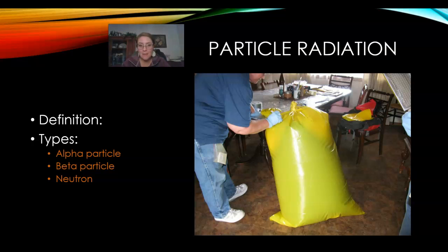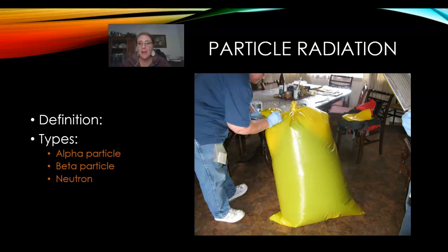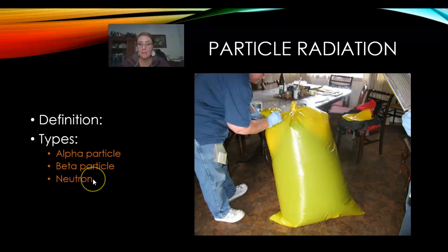If you don't know what that means, radioactive decay is when an atom spontaneously changes into another type of atom. We don't know exactly why it happens or when it happens — we don't know all the details — but we know that it occurs. And when that happens, it releases these particles, and some of them, like neutron radiation, are really, really bad and harmful.